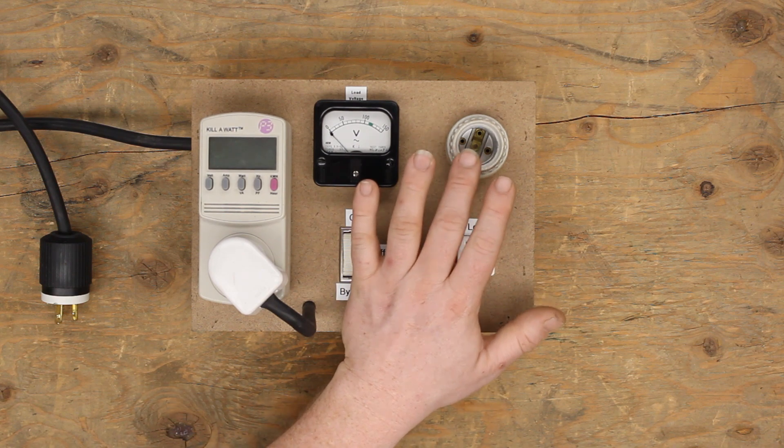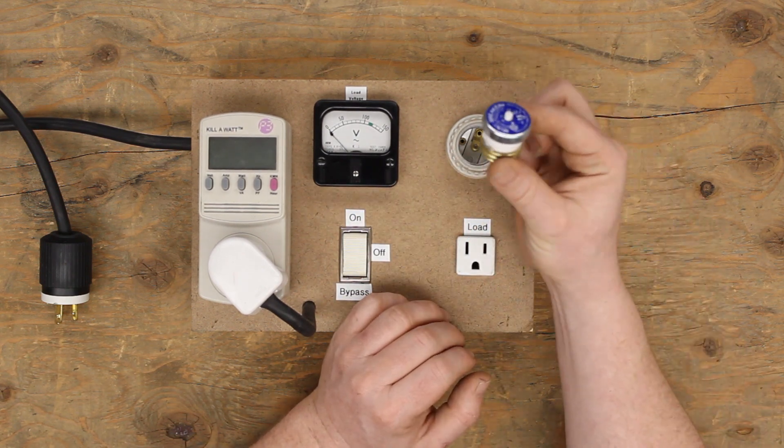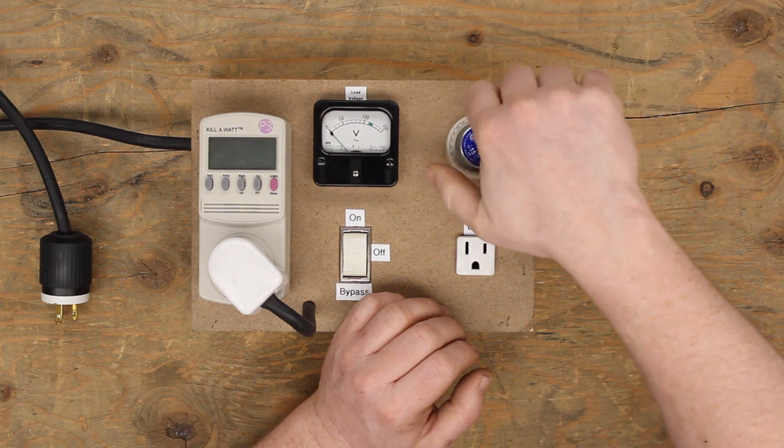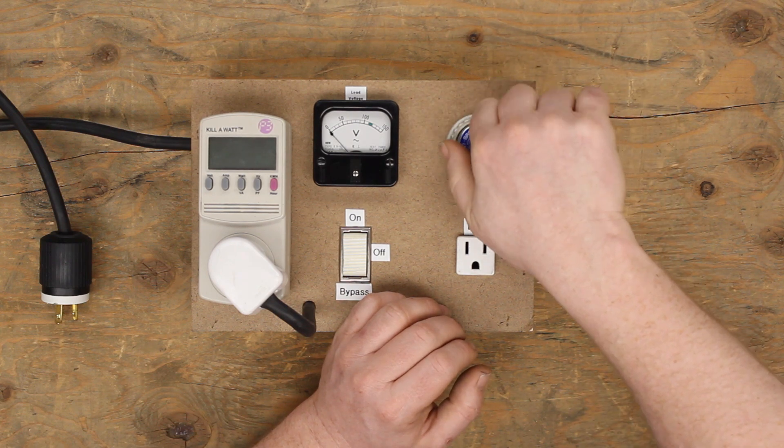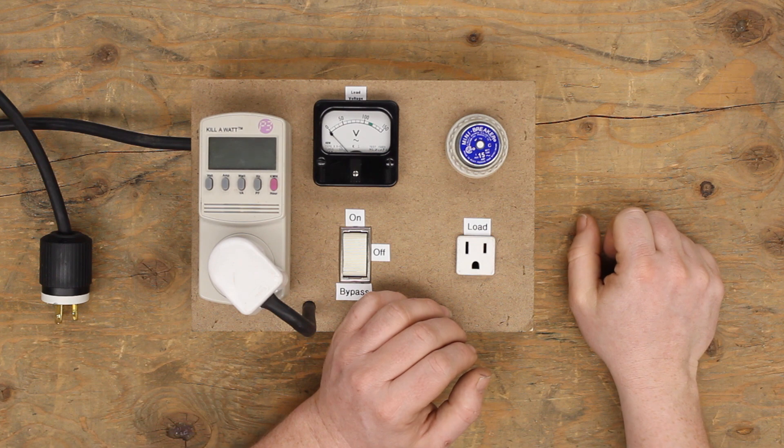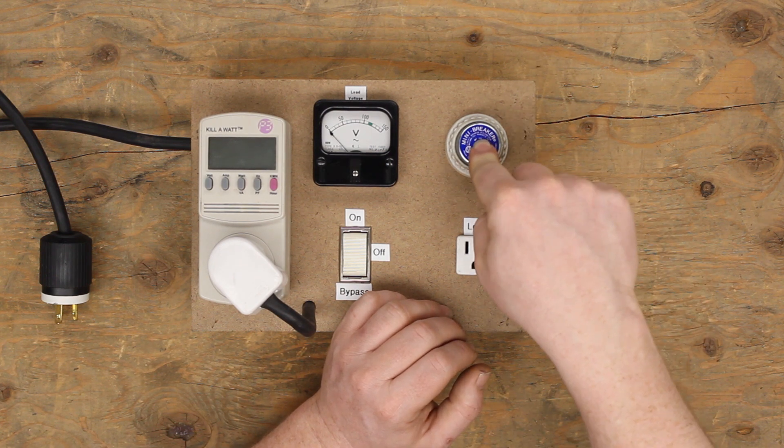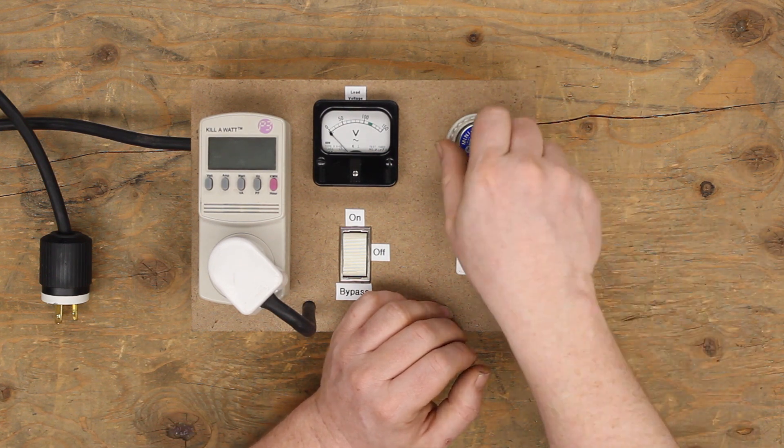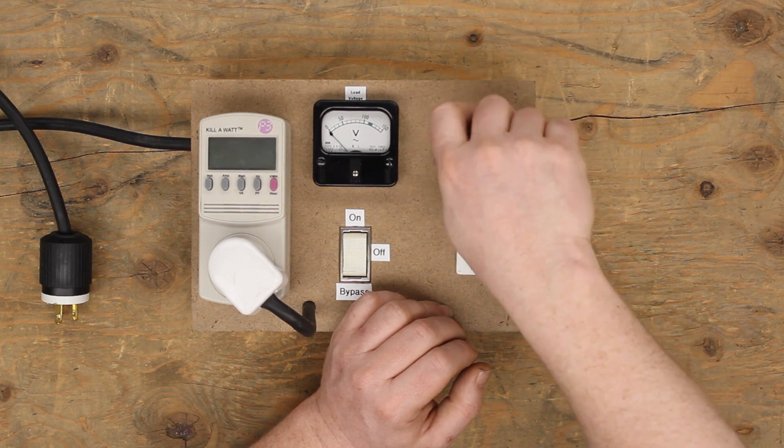Actually, I believe this is only rated for 2,000 watts. Well, you have these screw-in type circuit breakers. You could also use a screw-in type fuse if you so wish, but this is resettable. And you can use that for testing. This is my dim bulb tester.